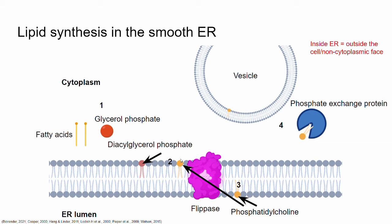The third step is the flipase: the enzyme flips the final lipid product to whichever leaflet is appropriate. For example, phosphatidylcholine made for the cell membrane is usually assigned to the outer leaflet. It is initially synthesized on the inner leaflet of the ER because the inside of the ER equals the outside of the cell — so that leaflet will face the outer leaflet of the cell membrane. The same principle applies to both the smooth and rough endoplasmic reticulum.